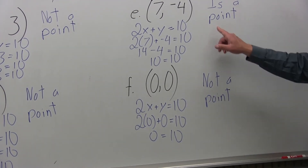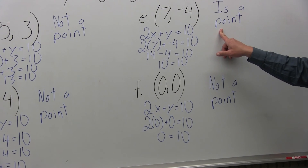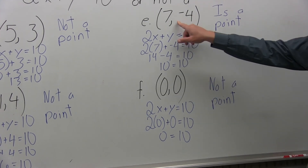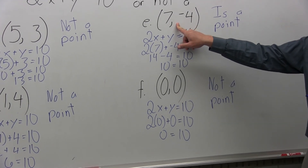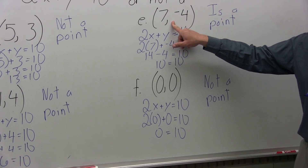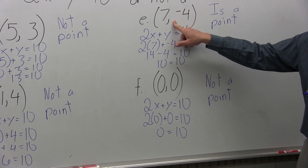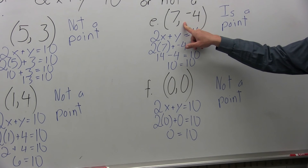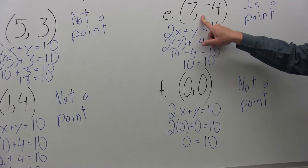So there was only one point that wound up being on the graph — the only one that made the equation true was (7, negative 4), which was Part E.